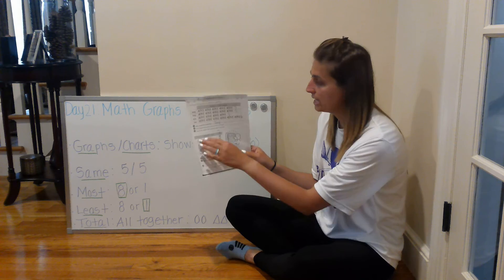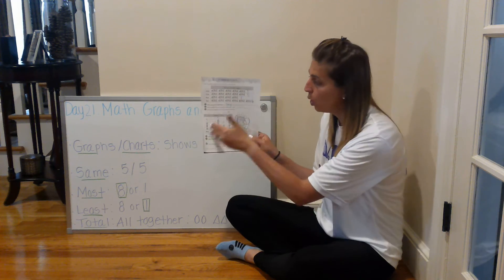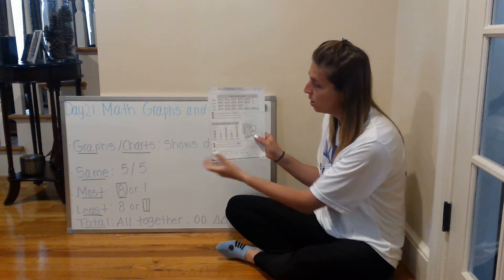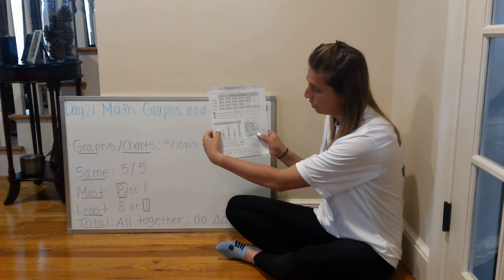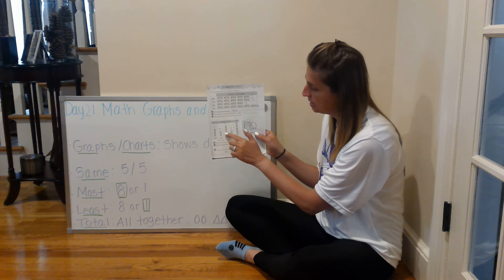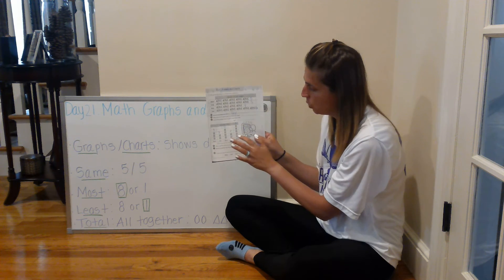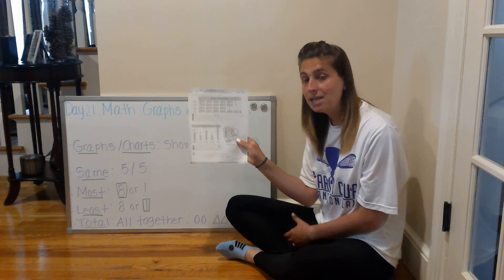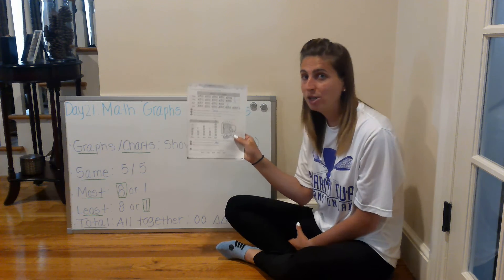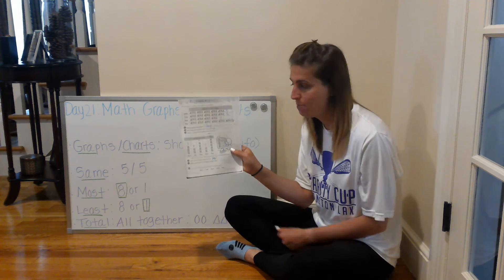If we count the total hours of computer time from all five individuals — three plus two plus four plus two plus five — we get 16. So 16 total hours of computer time was used based on these five people.